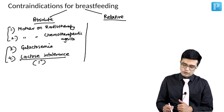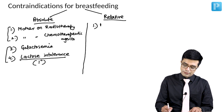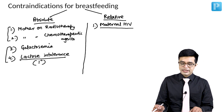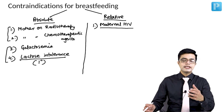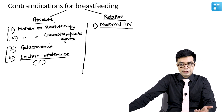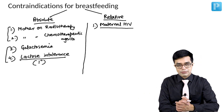Coming to relative contraindications — there are many. First is maternal HIV. A mother having HIV positivity is considered a relative contraindication. Ideally, an HIV positive mother should not breastfeed because the HIV virus can be transmitted.